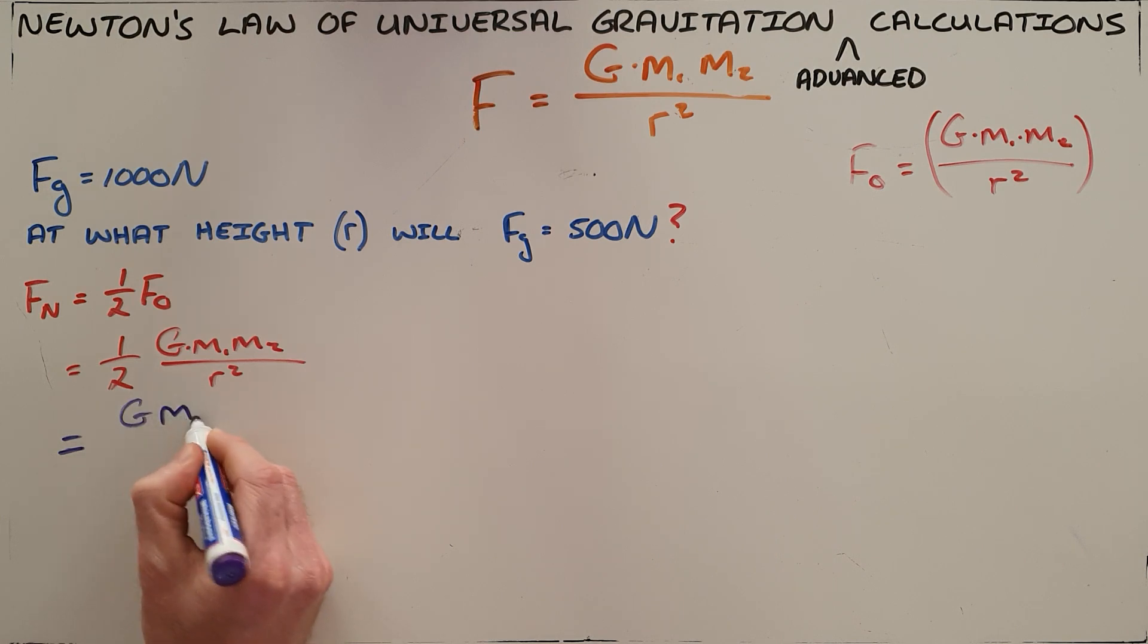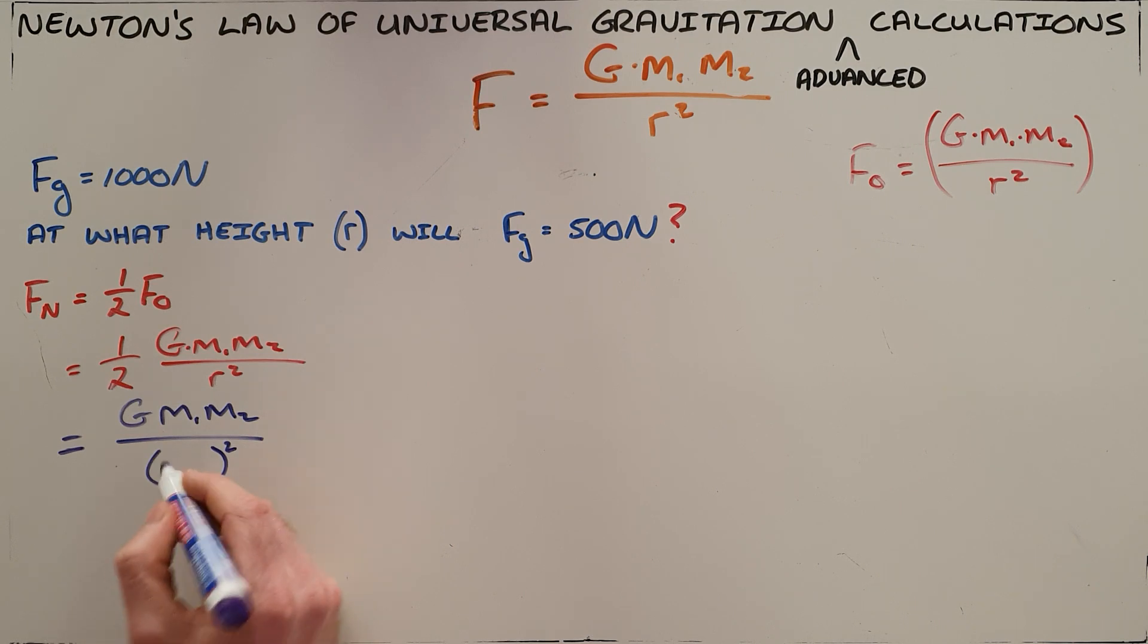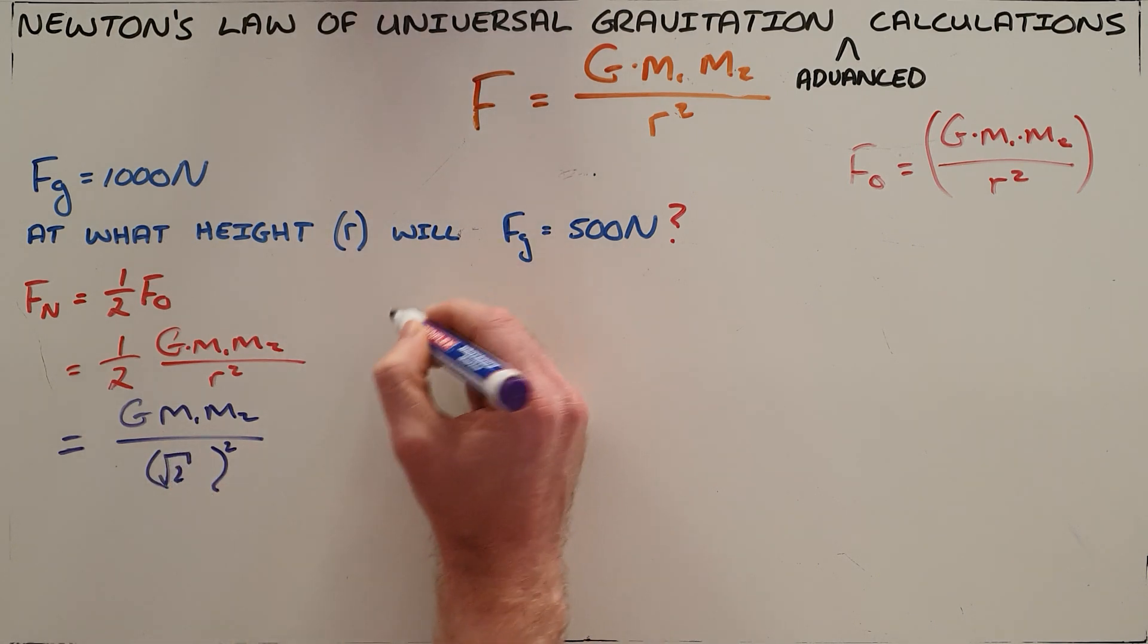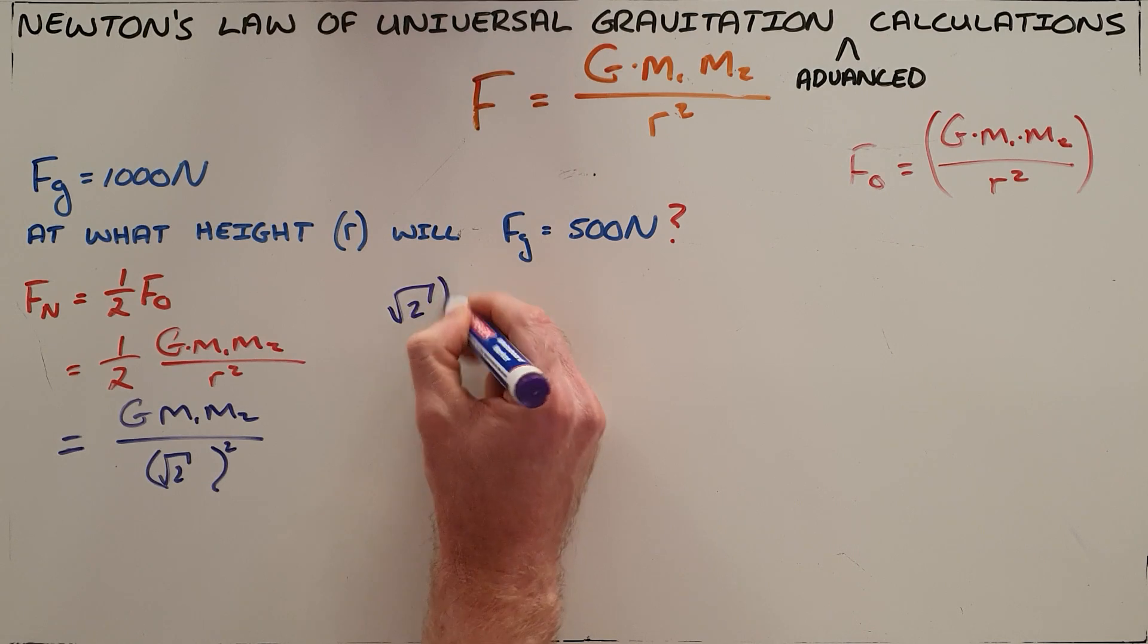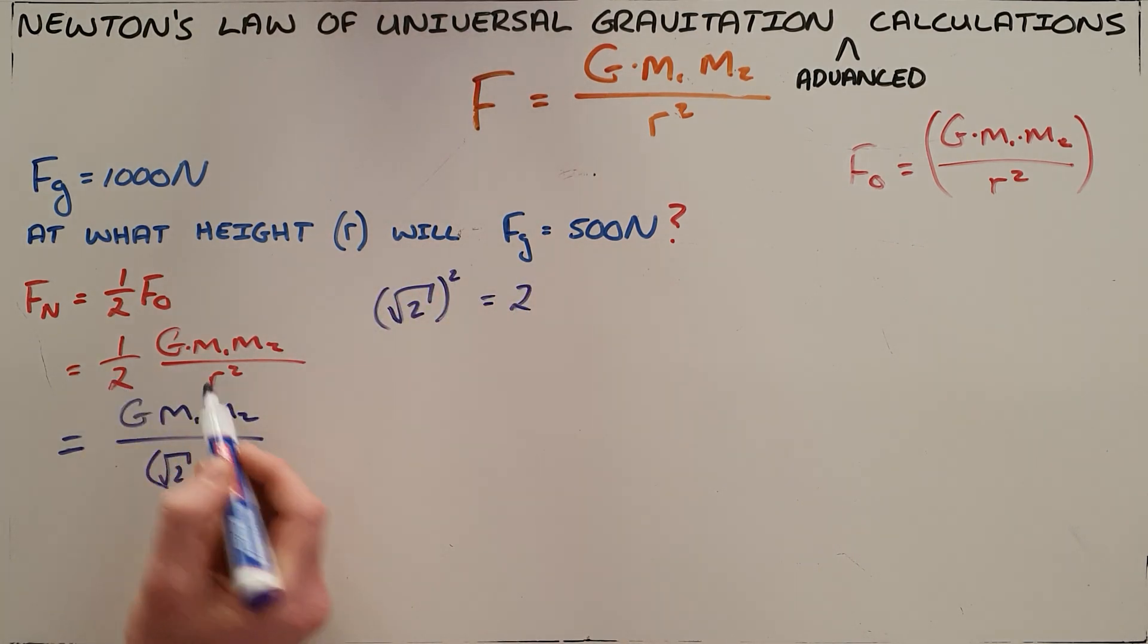In order to move the 2 into that bracket, we must first find the square root of 2, because we know that (√2)² is equal to 2. So I have just taken this number and put it into that bracket, and obviously the r stays there as well.